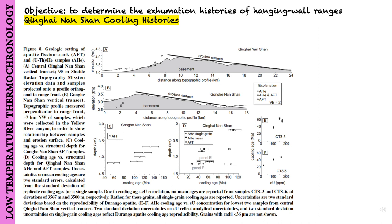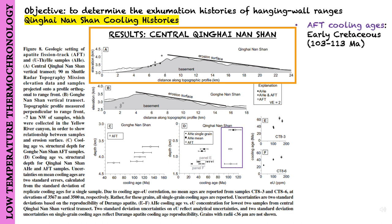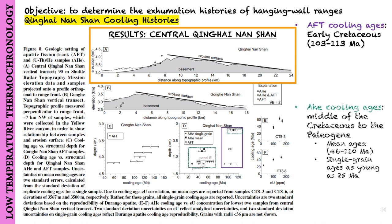Here are the results for the central Qinghai-Nanshan. Apatite fission track cooling ages date to the early Cretaceous, from 103 to 113 million years ago. Apatite helium cooling ages along the same transect range from approximately the middle Cretaceous to the Paleogene, with mean ages of 46 to 110 million years ago, and single grain ages as young as 25 million years ago.